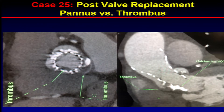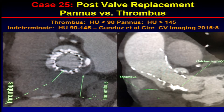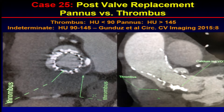Another thing we look at with CT is determining whether there's pannus or thrombus. This is a patient who had thrombus on a TAVR aortic valve, with thrombus also in the aortic root. When looking at thrombus versus pannus, if the Hounsfield units are less than 90 we consider it thrombus; if over 145, we consider it pannus; and in between is intermediate. We would always recommend anticoagulation in those patients to see if there's any improvement.